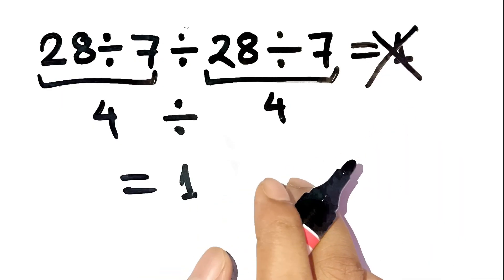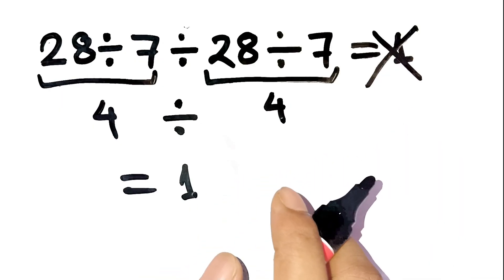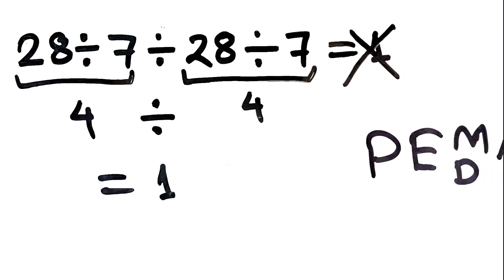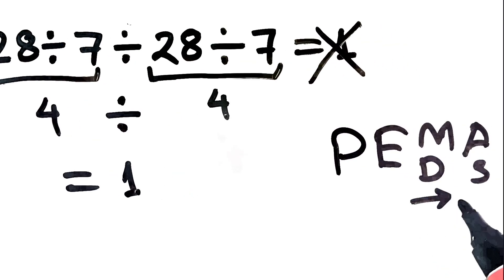But this is exactly where most people make the mistake. Let's pause and remember PEMDAS. That's parentheses, exponents, multiplication and division from left to right, and then addition and subtraction.